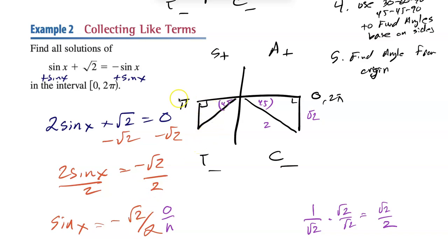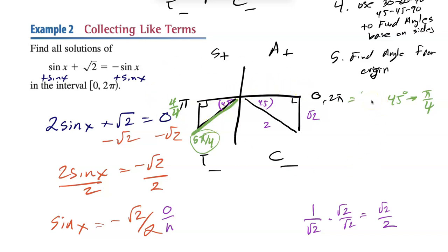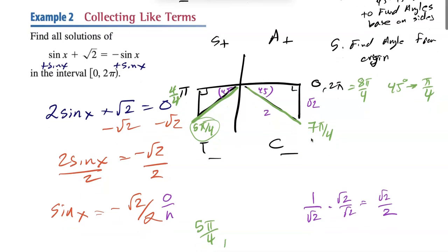If we were doing degrees, the answers would be 180+45=225 and 360−45=315. But since we're working in radians, 45 degrees is π/4. For quadrant 3: π is 4π/4, go one more to get 5π/4. For quadrant 4: 2π is 8π/4, one less gives 7π/4. So our answers are 5π/4 and 7π/4.